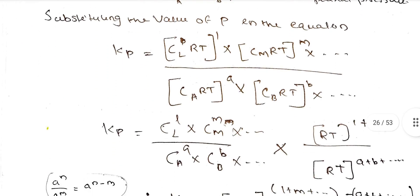Substituting P = CRT, we get Kp equal to CL·RT all raised to L, times CM·RT all raised to M, and so on. We separate out the RT and concentration terms. This gives us C and M terms, all raised to their respective powers.